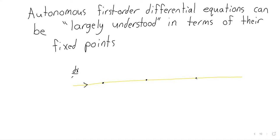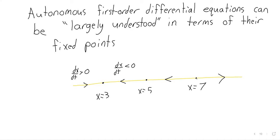So maybe you find that the derivative is positive here, negative here, negative here, and positive there. Let's say our values are three, five, seven. This chart that we've just put on the whiteboard allows us to totally analyze the long-term behavior of this system.